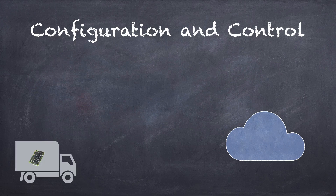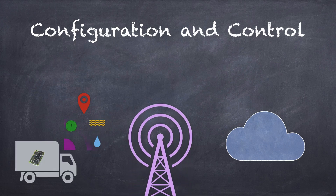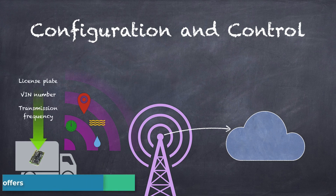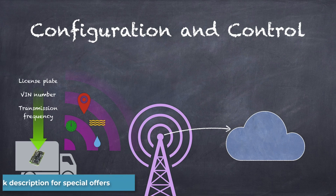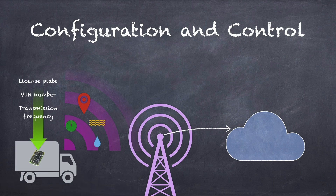In a fleet management example, a device is used to track the location and certain on-vehicle telemetry, and report that information back to the cloud via a cellular connection. Certain parameters will need to be written once the device is installed, such as the unique ID of the trailer or truck, perhaps the license plate or bid number. Other configuration settings, such as the amount of time between sending position messages, are also determined and programmed into the device.